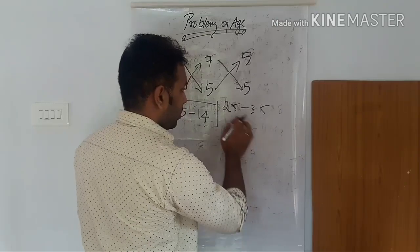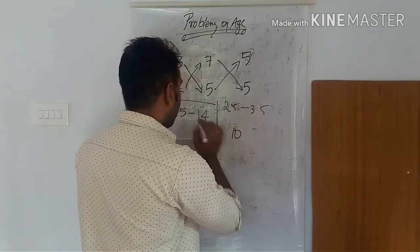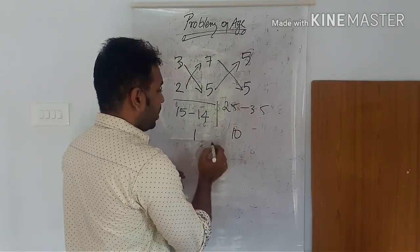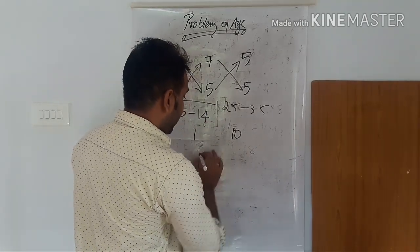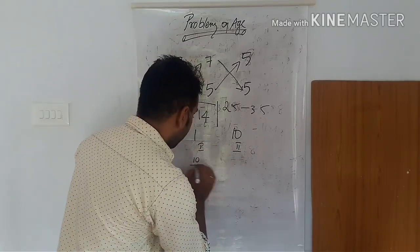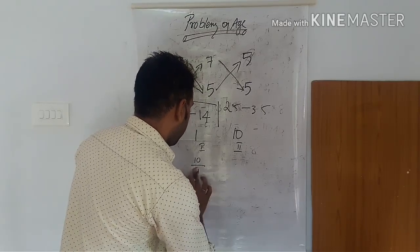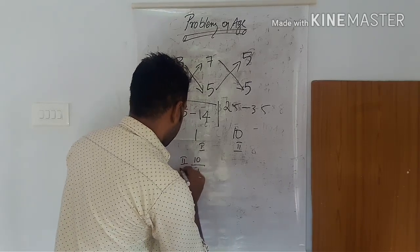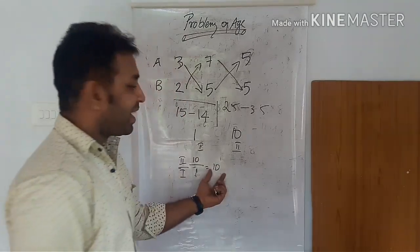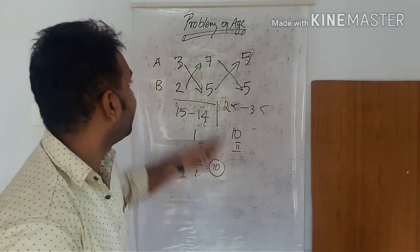25 minus 35 is equal to minus 10, that is 10. Then 15 minus 14, which is equal to 1. Then the second value divided by the first value: 10 divided by 1, which is equal to 10. The value of 10 is our answer.